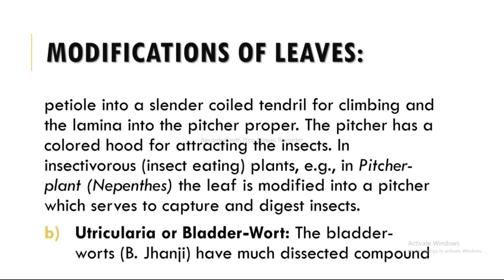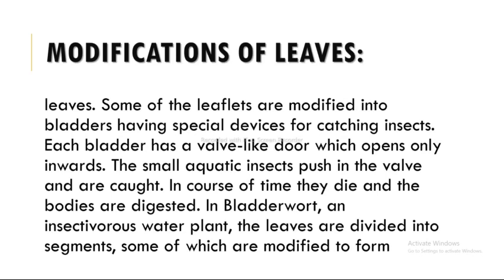The next modification is Utricularia or bladderwort. Bladderworts have much-dissected compound leaves; some of the leaflets are modified into bladders having special devices for catching insects. Each bladder has a valve-like door which opens only inward. Small aquatic insects push in the valve and are caught. In course of time they die and their bodies are digested. In bladderwort, the leaves are divided into segments, some of which are modified to form bladders containing digestive enzymes.